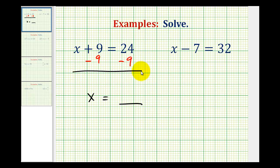Now notice on the left side, plus 9 minus 9, that would be 0. So now we are left with x. We bring down the equal sign. And on the right side, we have 24 minus 9, which is equal to 15.